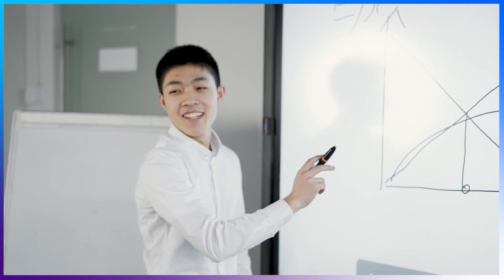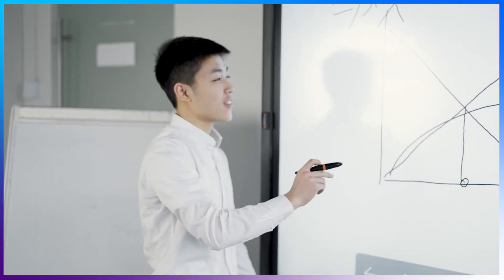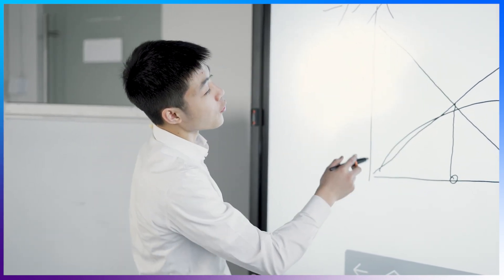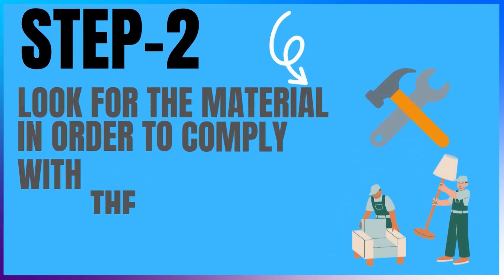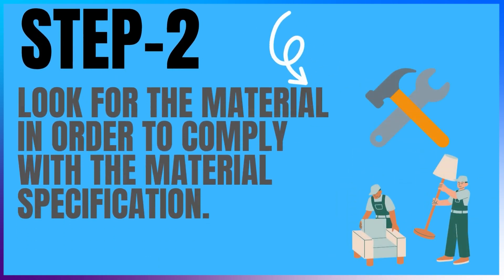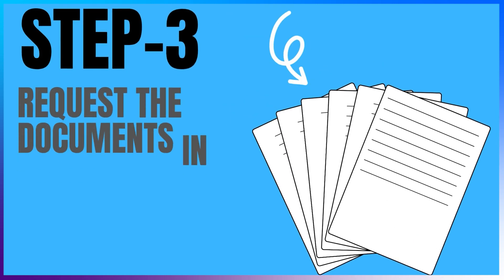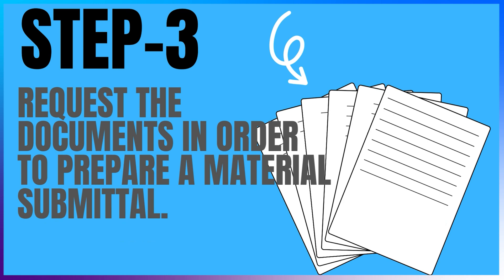How can it be prepared? It can be simplified into 6 steps. Step 1: Find the specification for the material. Step 2: Look for the material in order to comply with the material specification within your budget and availability in the local market. Step 3: Once the supplier or manufacturer is finalized, request the documents listed above in order to prepare the submittal document.